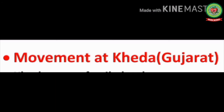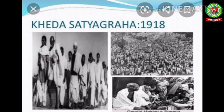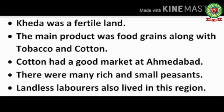The second big movement of Mahatma Gandhi on Indian soil was the Kheda Satyagraha of 1918, where he worked for the poor peasants of Kheda whose crops had been destroyed due to heavy rains. Kheda was a fertile land; the main products were food grains along with tobacco and cotton. Cotton had a good market at Ahmedabad, and there were many rich and small peasants as well as landless laborers living in this region.